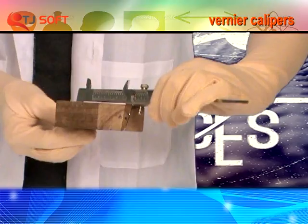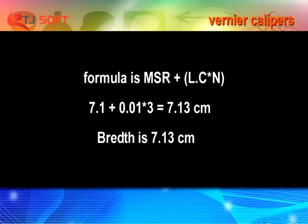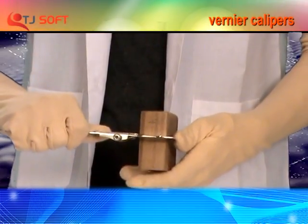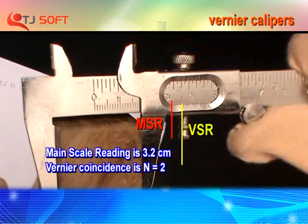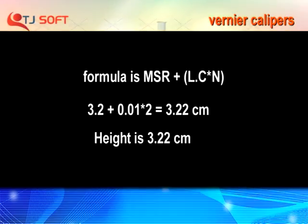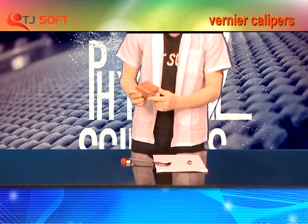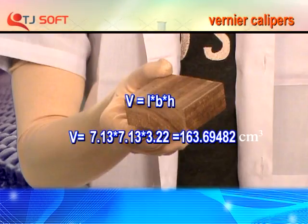Note down the readings MSR and VSR in the tabular column. Repeat those steps two to three times to get the true breadth. After obtaining all measurements, we get the length, breadth, and height of the regular body. Using these values and the formula V equals length into breadth into height, the volume can be calculated.